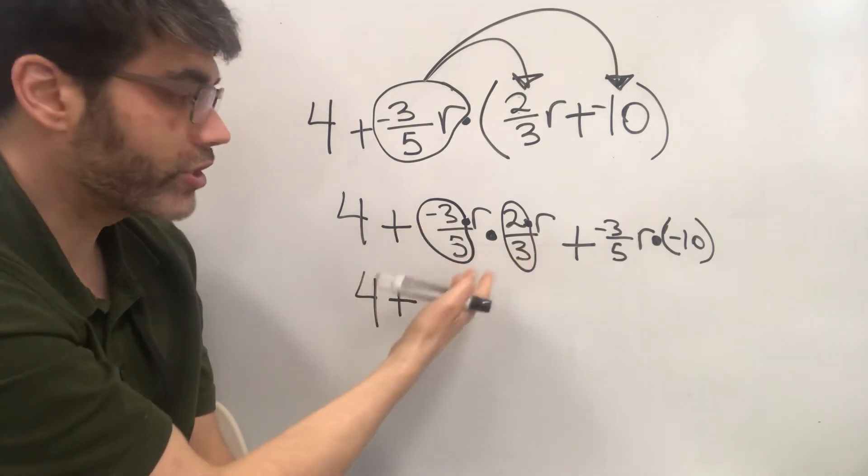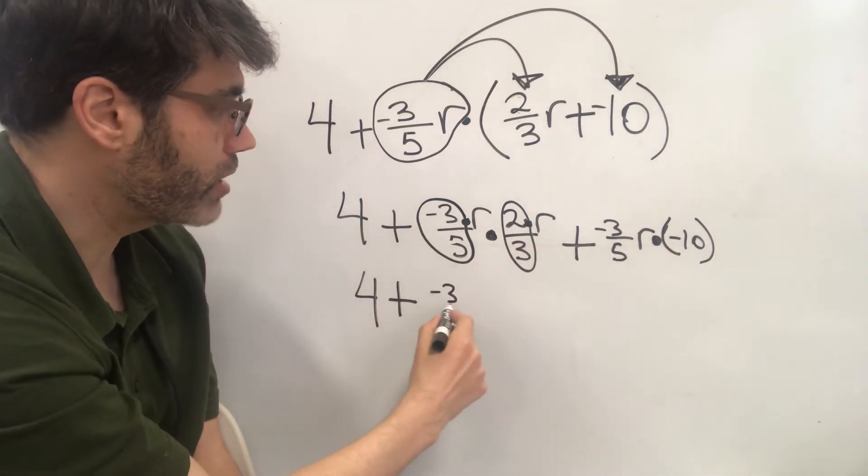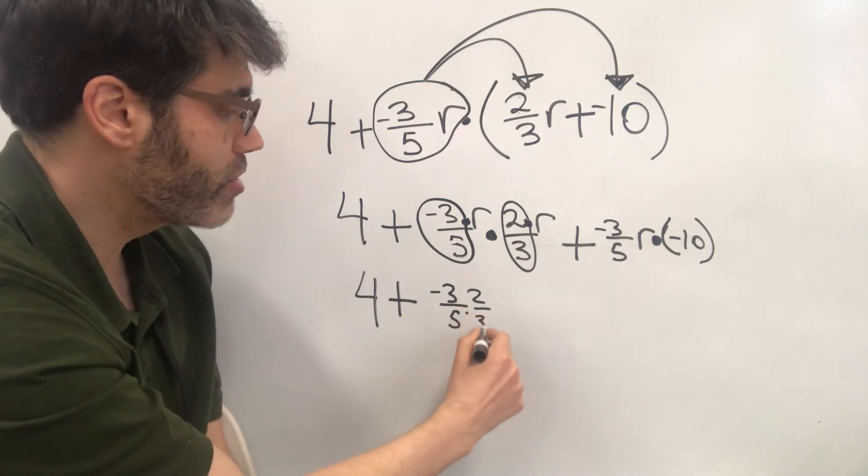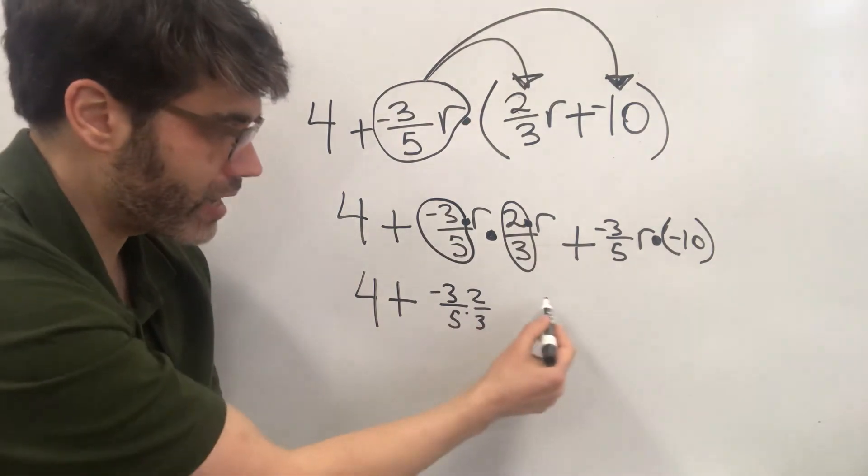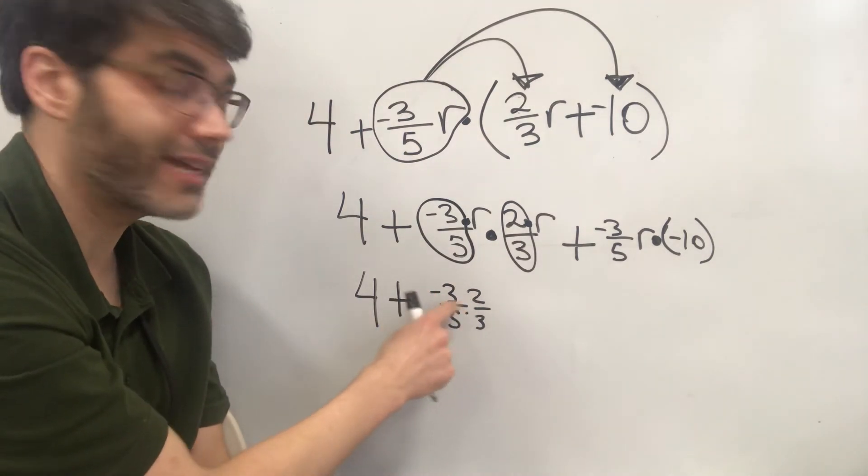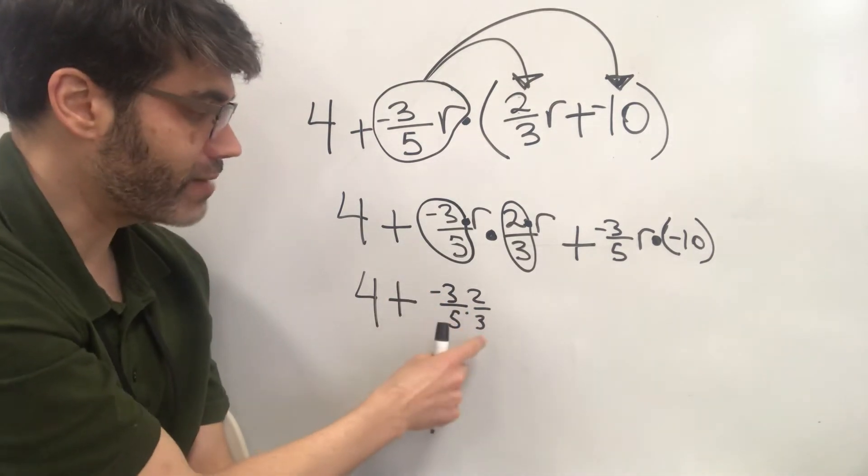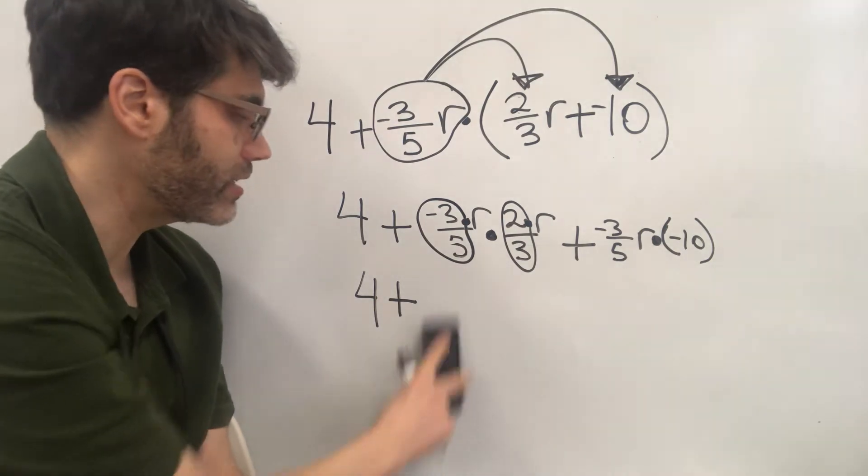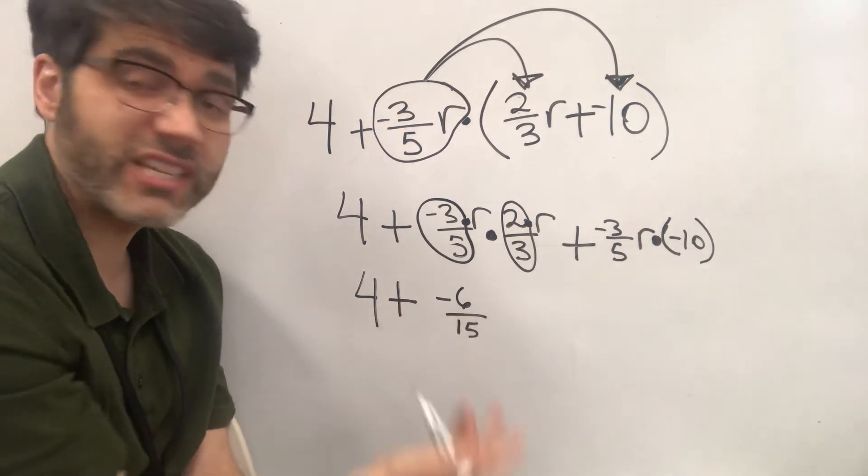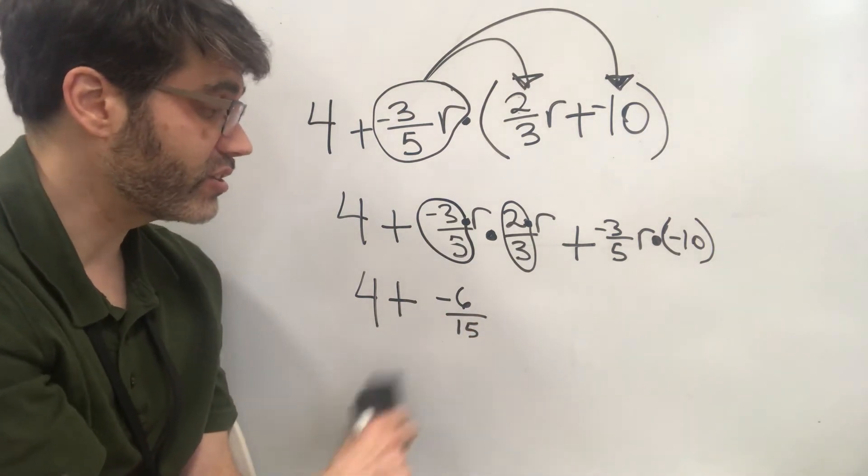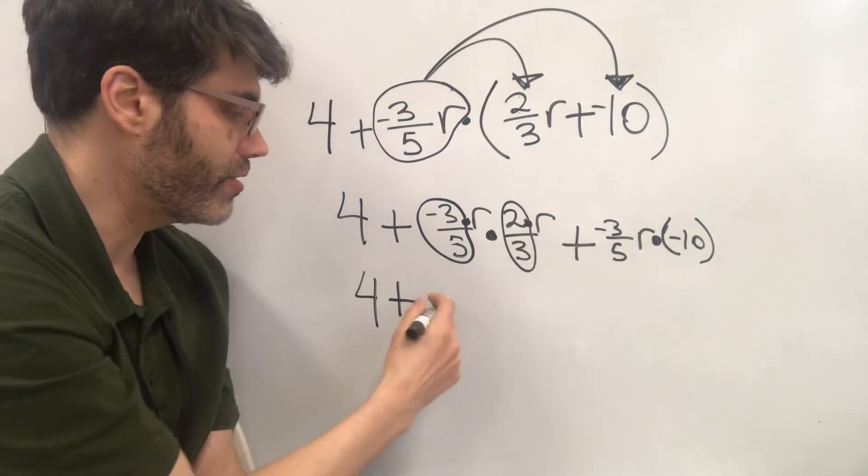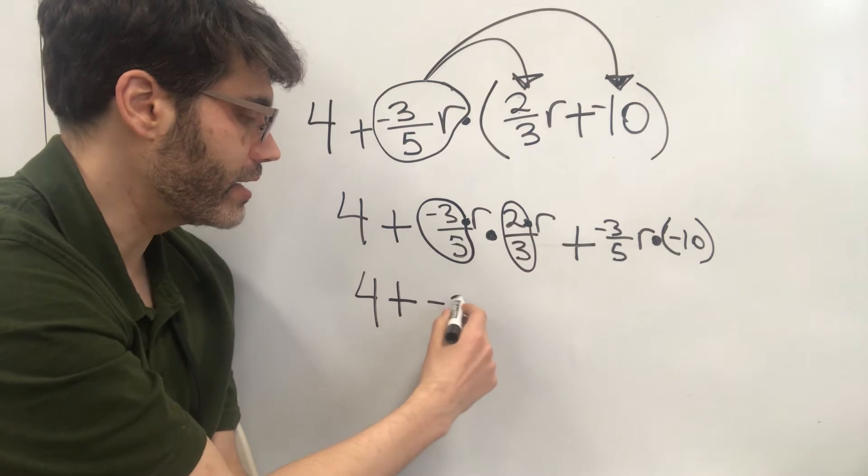So it's just as we're multiplying fractions. If we were multiplying negative three-fifths times two-thirds, you multiply across the top and across the numerator and across the denominator. So negative three times two is negative six. Five times three is fifteen. So that's negative six-fifteenths. We'll get to the r in a second. Negative six-fifteenths can be reduced. Three goes into six and fifteen. So three goes into six twice. Three goes into fifteen five times.